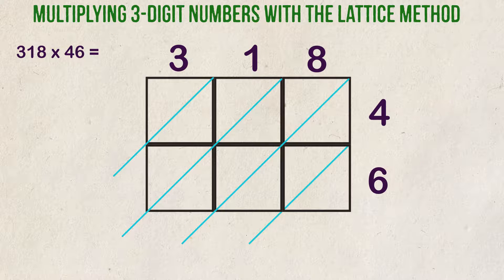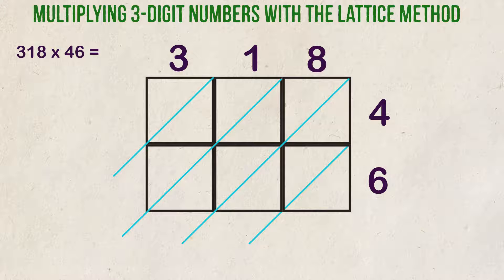We add diagonal lines through each box, which will help separate our ones, tens, hundreds places, and so on.